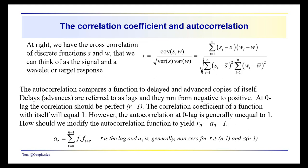The autocorrelation compares a function to a copy of itself that's delayed or advanced. We expect that when we compare the function with itself it's going to have a perfect correlation. However, if we shift the function relative to its initial location, that correlation is going to be less than one.